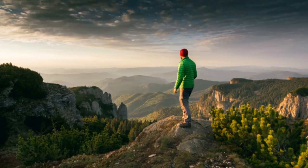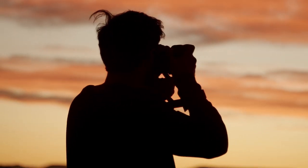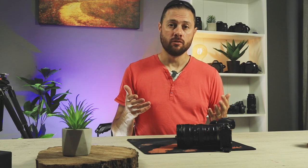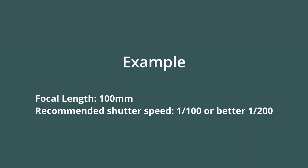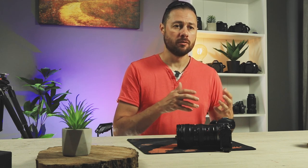Beginner photographers make this mistake because they're not paying attention to the shutter speed they're using. If you're going to handhold your camera and the shutter speed is too slow for a handheld shot, you will end up with a shaky image. You can activate the image stabilization — in-body stabilization if you have one, or lens stabilization if you have one. The shutter speed should be at least 1 over the focal length you're using, or better yet, two times the focal length.